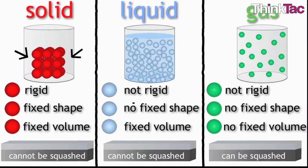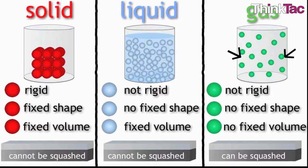Molecules in a solid are packed close together and move very little, only about their fixed position. Molecules in a liquid can move about more than in a solid — the intermolecular spaces are more and molecules are less tightly packed. The molecules in a gas are far apart from each other and there are almost no forces of intermolecular attraction acting between them.